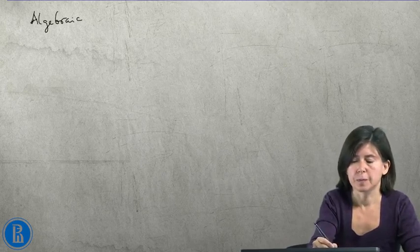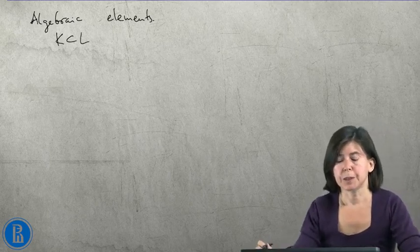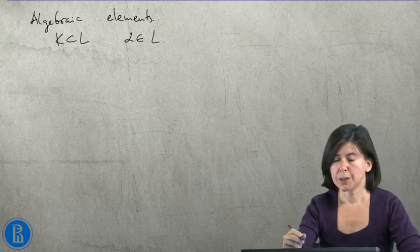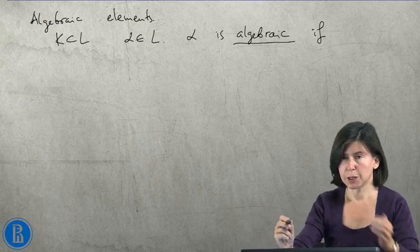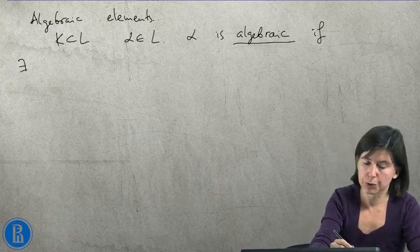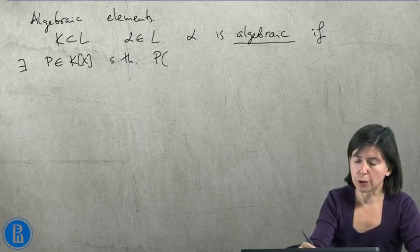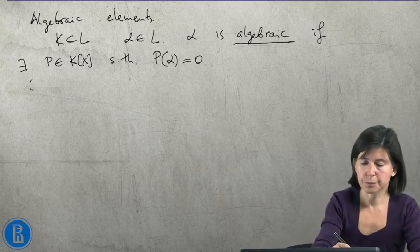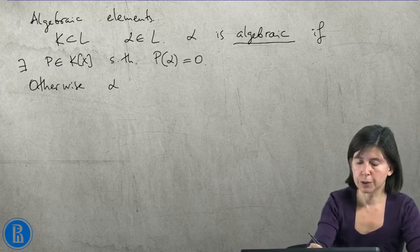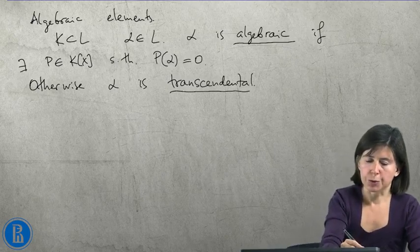Okay, now let me talk about algebraic elements. So I have a field extension K in L, and I take alpha in L. I say that alpha is algebraic if I can find some polynomial, if there exists a P in K[x] such that P(alpha) is zero. Otherwise, I say that alpha is transcendental.